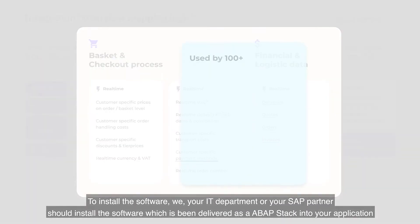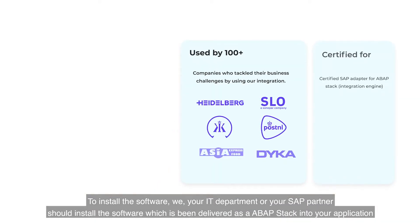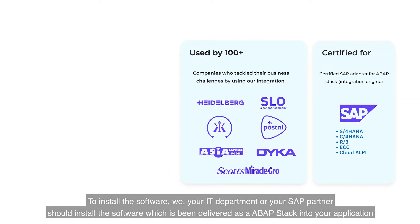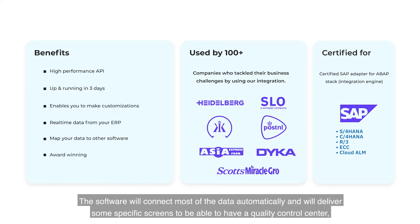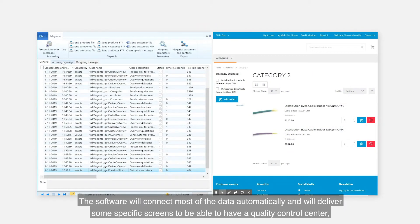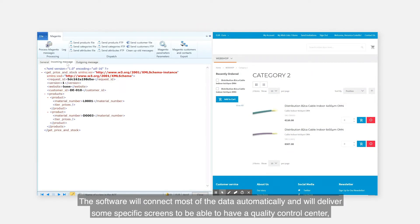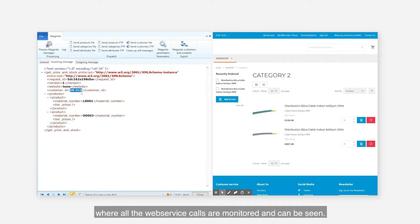To install the software, we, your IT department or your SAP partner, should install the software which has been delivered as a certified ABAP stack into your application. The software will connect most of the data automatically and will deliver some specific screens to be able to have a quality control centre where all the web service calls are monitored and can be seen.